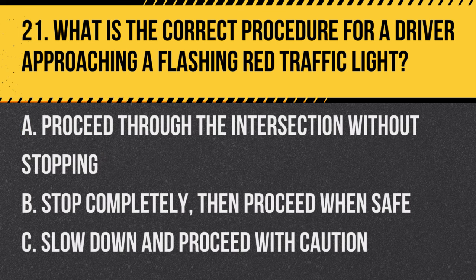Question 21. What is the correct procedure for a driver approaching a flashing red traffic light? A. Proceed through the intersection without stopping. B. Stop completely, then proceed when safe. C. Slow down and proceed with caution. Answer: B. Stop completely, then proceed when safe. A flashing red light is treated like a stop sign, requiring a full stop, and proceeding only when safe.